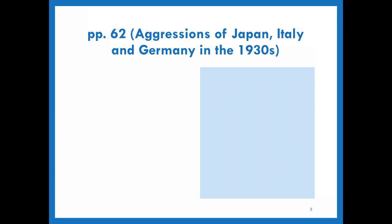First of all, let us have a revision before talking about new issues. In previous weeks, we understood that several countries, including Italy, Germany and Japan, became totalitarian states during the inter-war period.